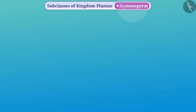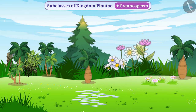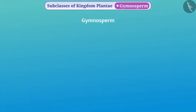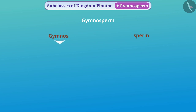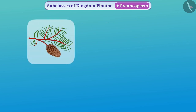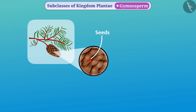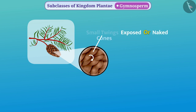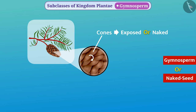Gymnosperm is a subclass of kingdom Plantae. In the garden you must have seen plants such as cycas and Christmas tree. The term gymnosperm is made up of two Greek words: 'gymnos' meaning uncovered or naked, and 'sperm' meaning seeds. These are plants whose seeds are not covered by the ovary wall but are in open, exposed, or naked positions in small twigs or cones. For this reason they are also called naked seed plants.